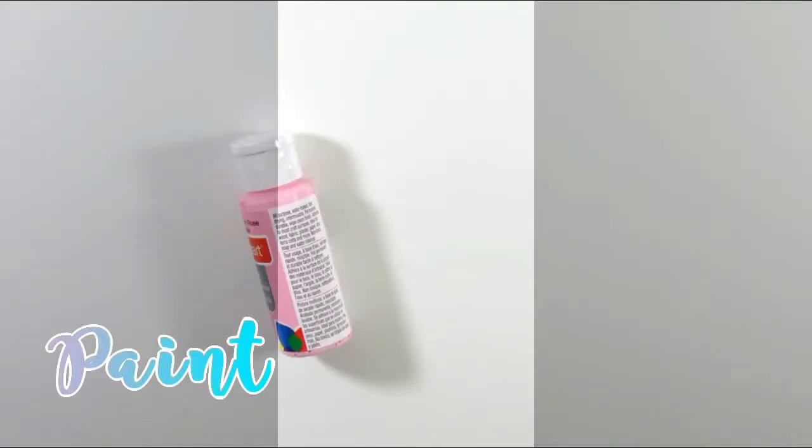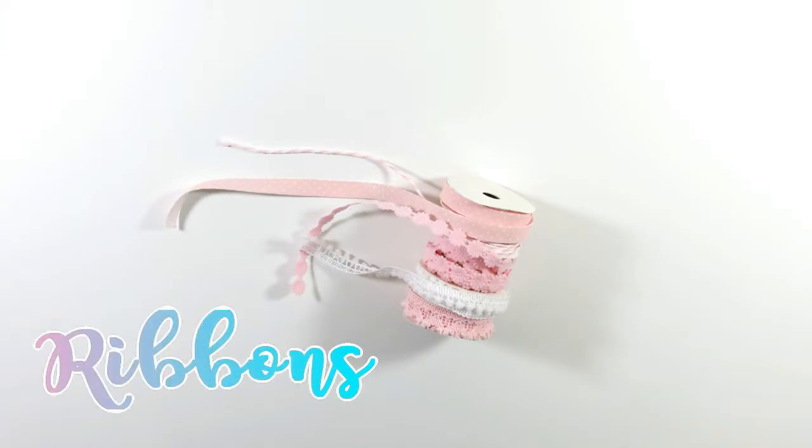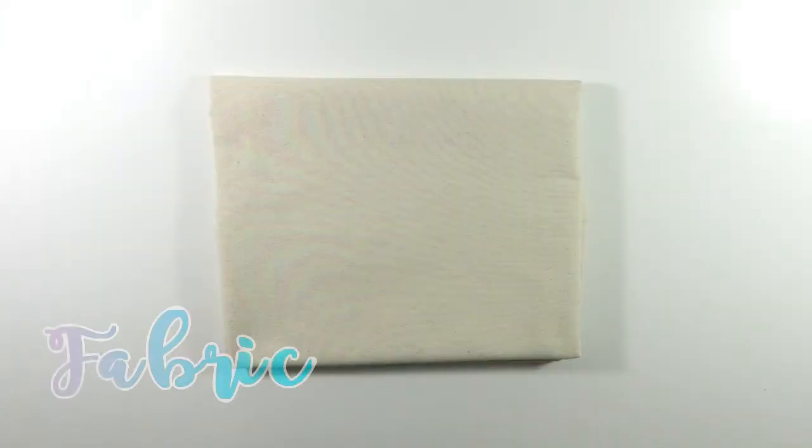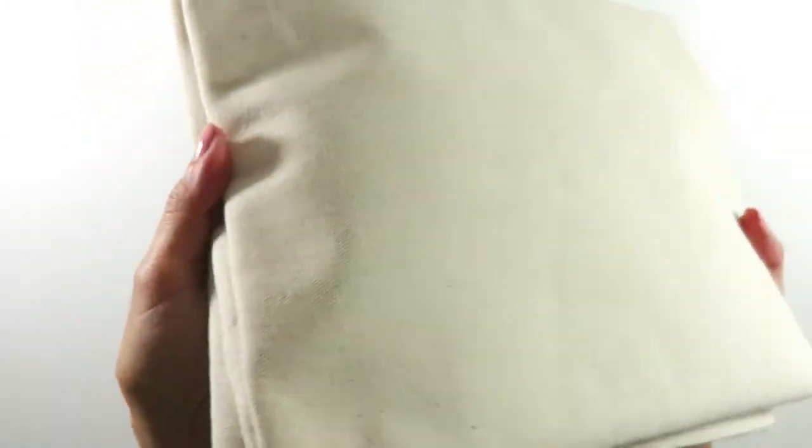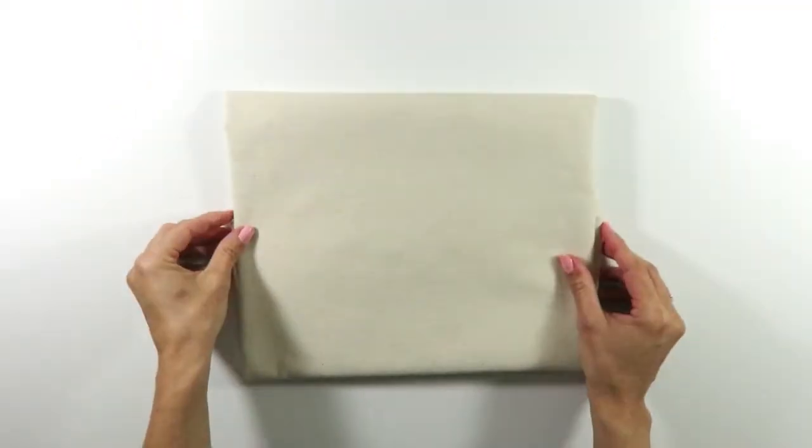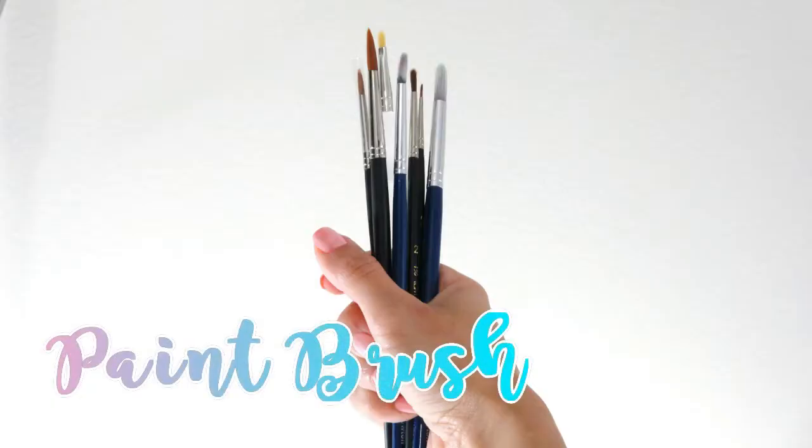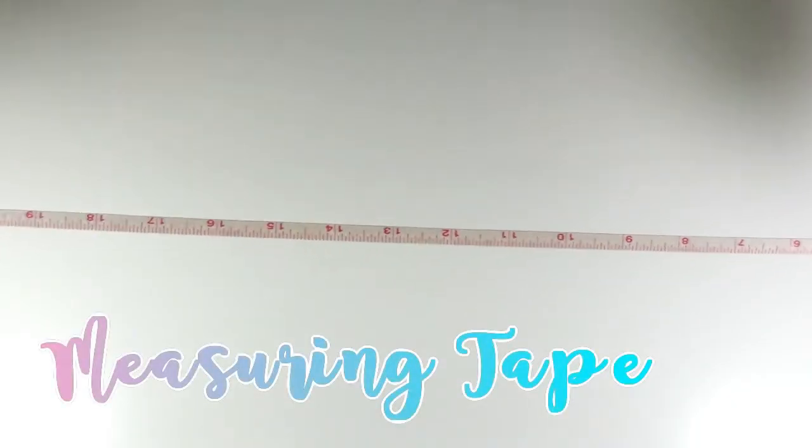I use acrylic paint in pink, white, and black, ribbons in different colors - I use white and pink. For the fabric I use this canvas kind of fabric that is very strong and I really like the color. A paint brush or two, measuring tape or a ruler.